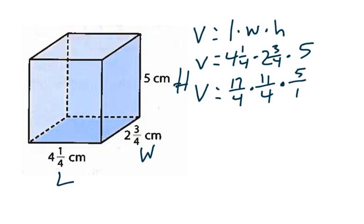So, now our next step is going to be to simplify this. So, I am going to multiply my denominators first, because it is easier. 4 times 4 is 16, times 1 is 16. So, my denominator here is going to be 16.